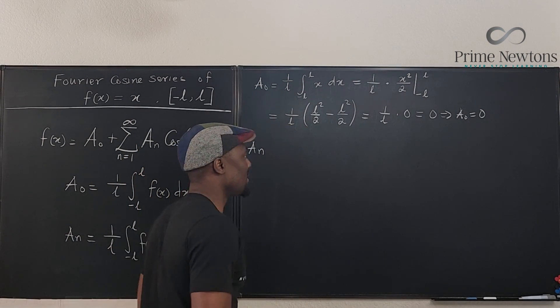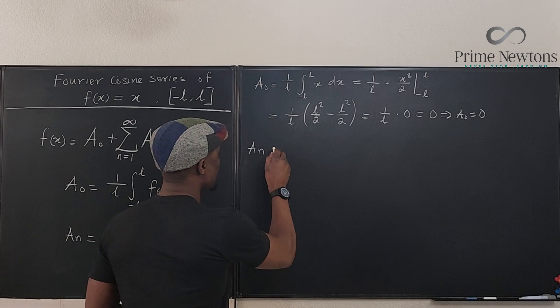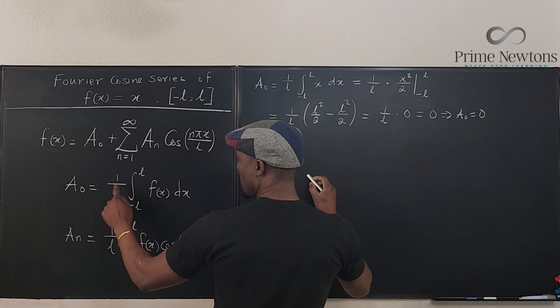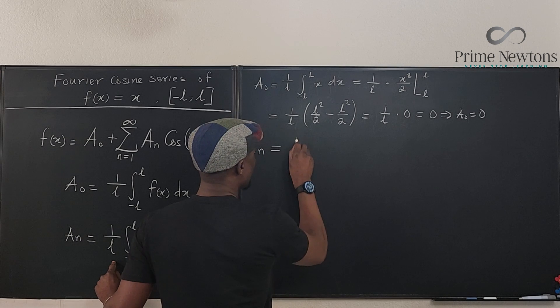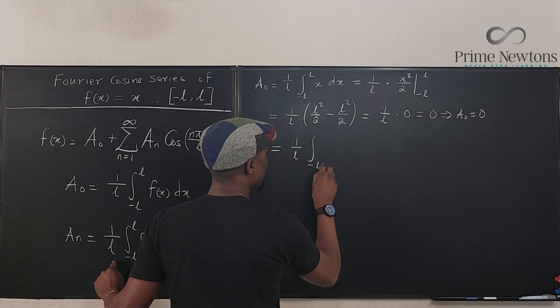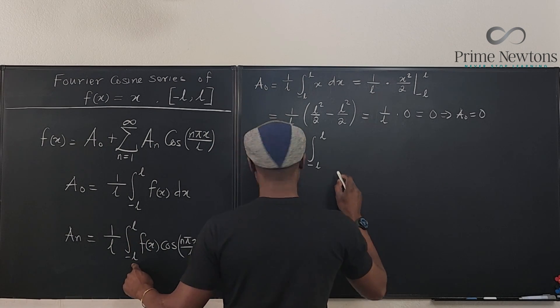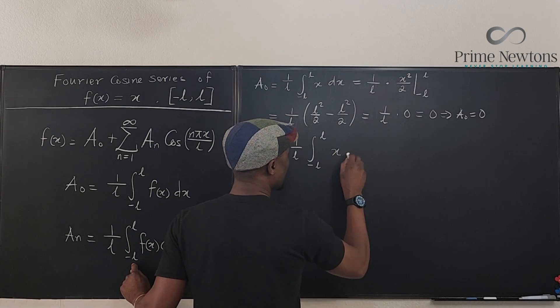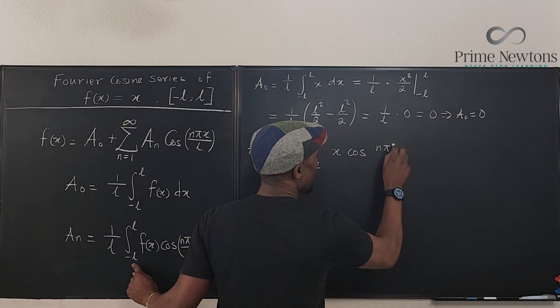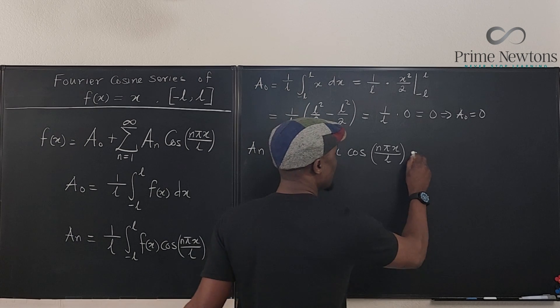Let's go find what the cosine series are going to be in this case. So a_n will be equal to, from our formula also, it's going to be, where is it? Right here. 1/L multiplied by the integral from negative L to L of what's the function? The function is x times the cosine of nπx/L. dx.